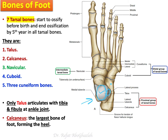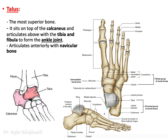Also in the proximal group is the calcaneus, which is the largest tarsal bone and forms the heel. Now let's start with the talus. Here in the lateral view, superior view, and anterior view, you can see the talus is the most superior bone in the foot.